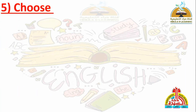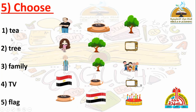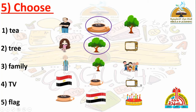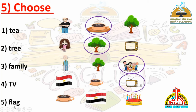Number five: Choose — اختر. Number one: Tea — شاي. The answer is the second. Number two: Tree — شجرة. The answer is the second. Number three: Family — عائلة. The answer is the third. Number four: TV — تلفزيون. The answer is the third. Number five: Flag — علم. The answer is the second. Excellent.